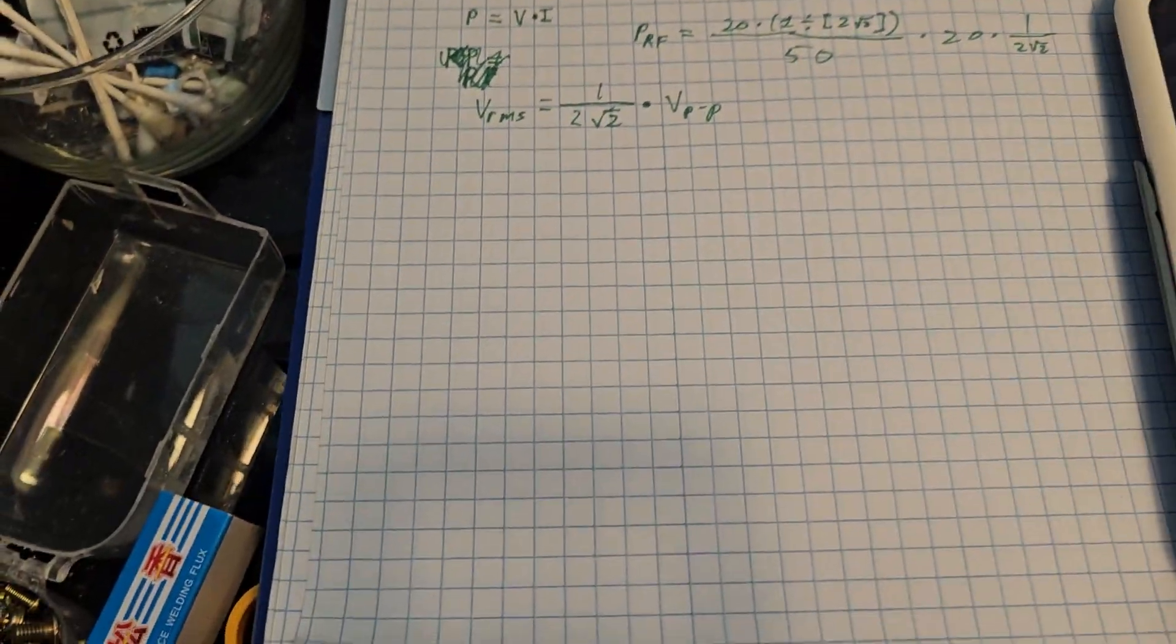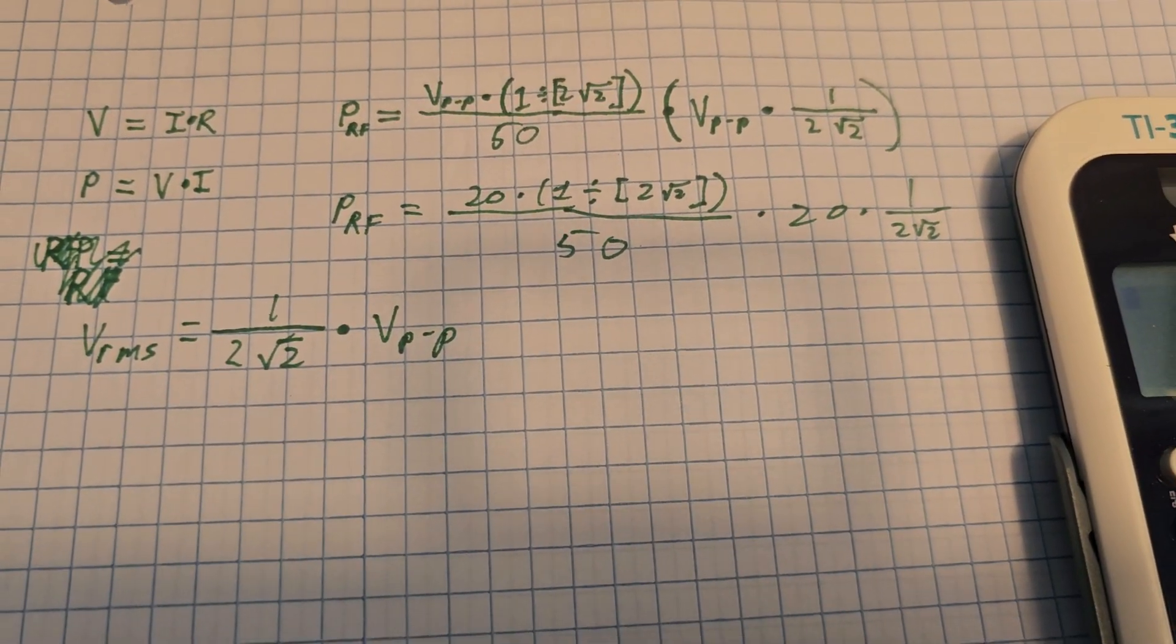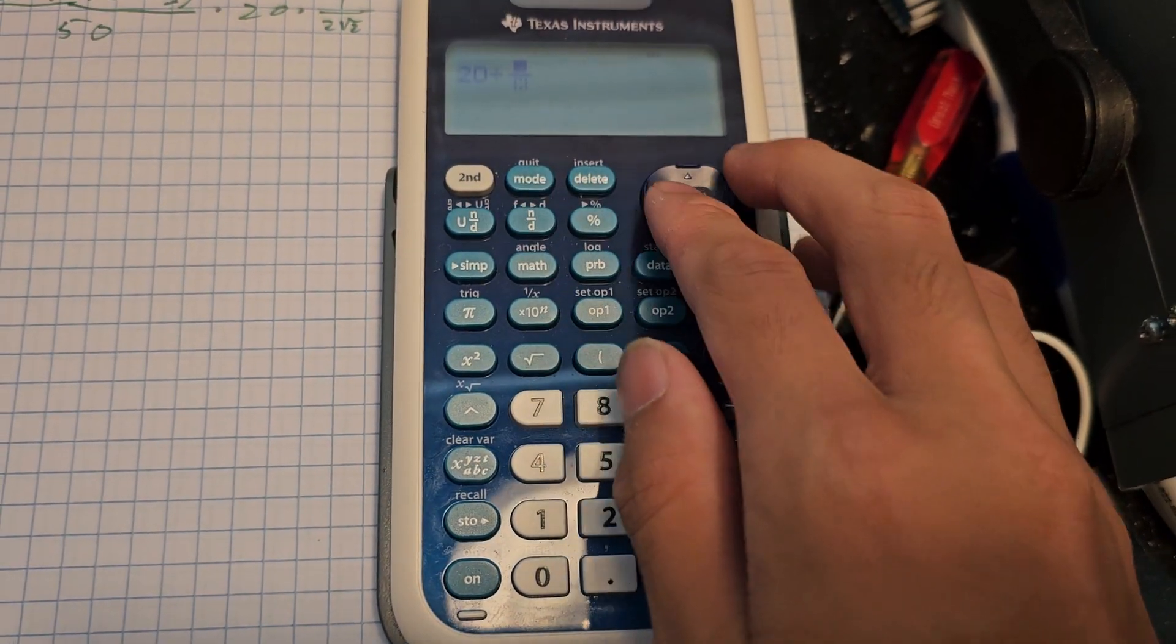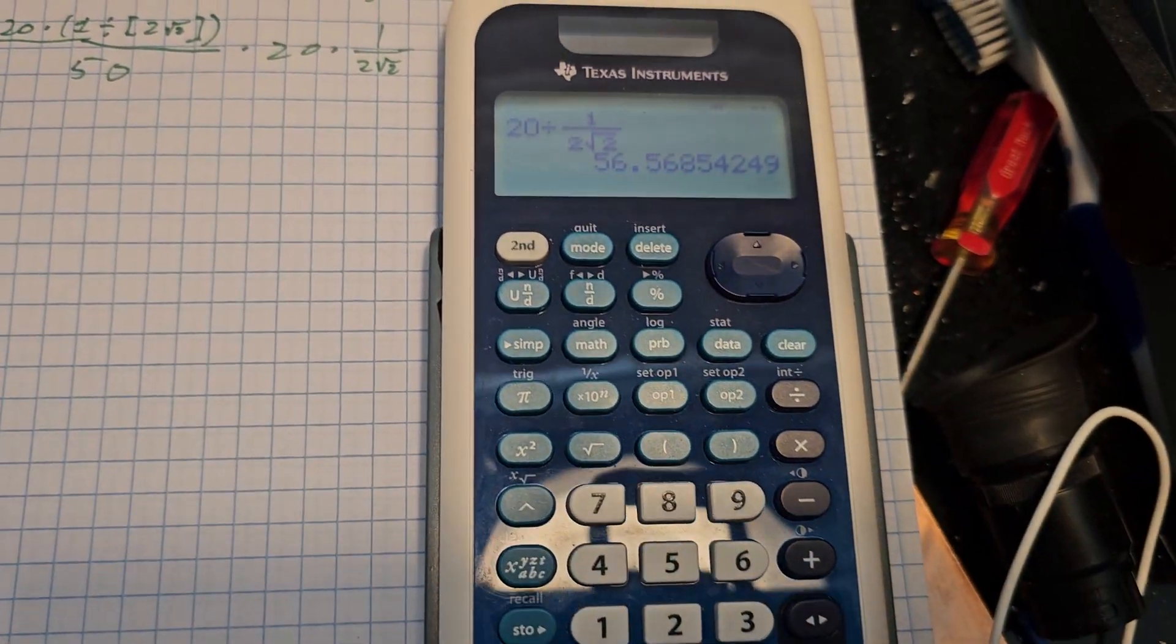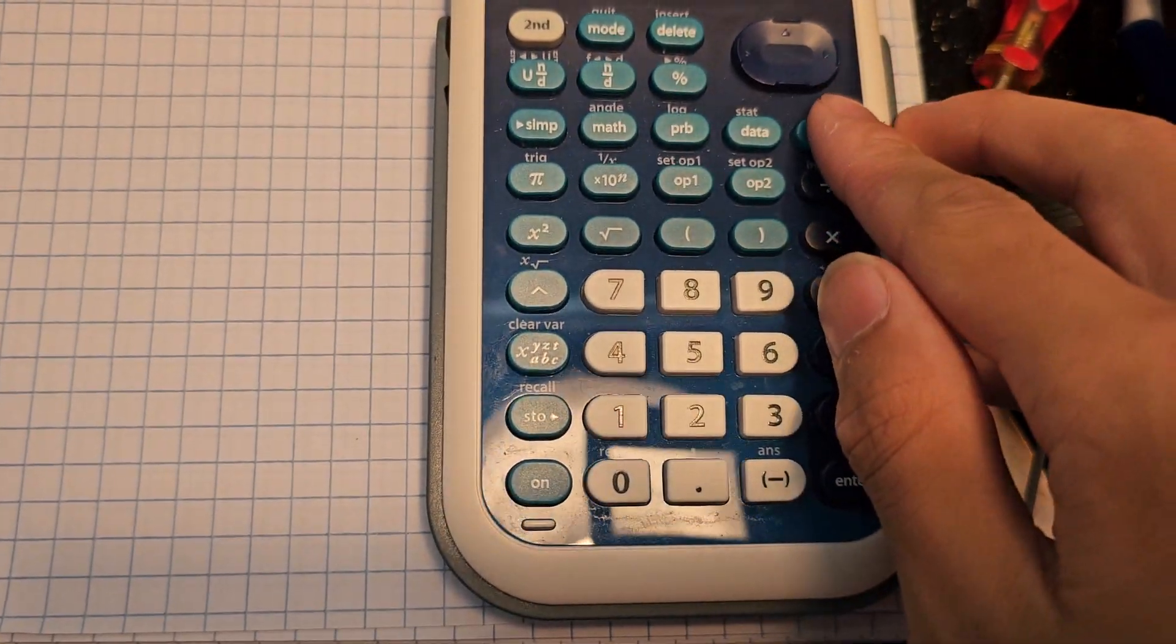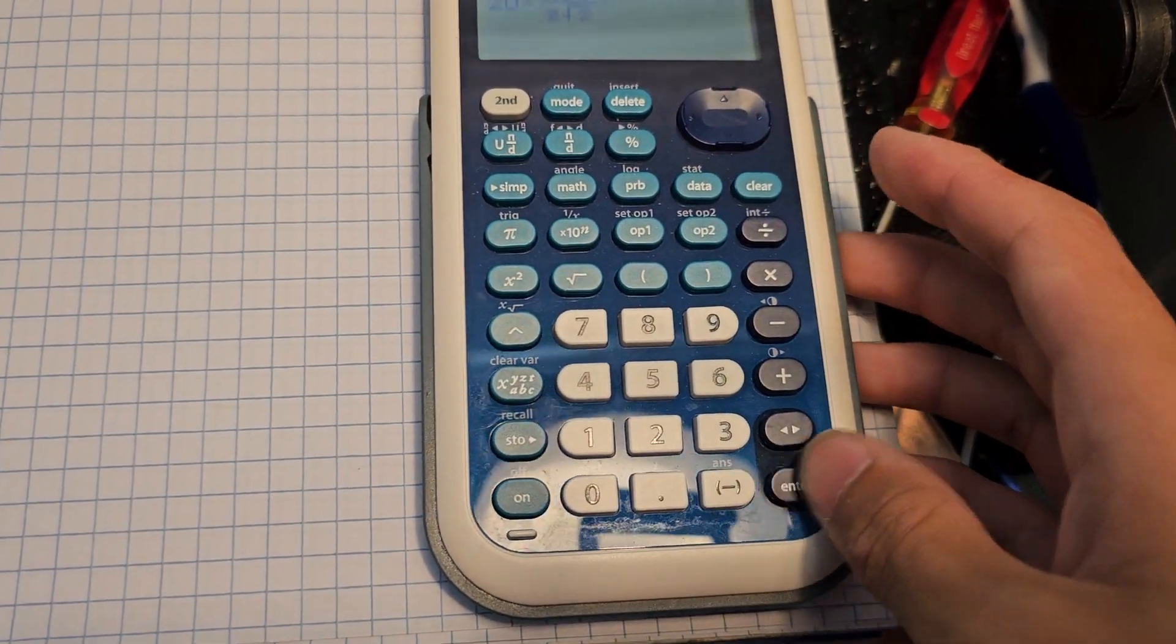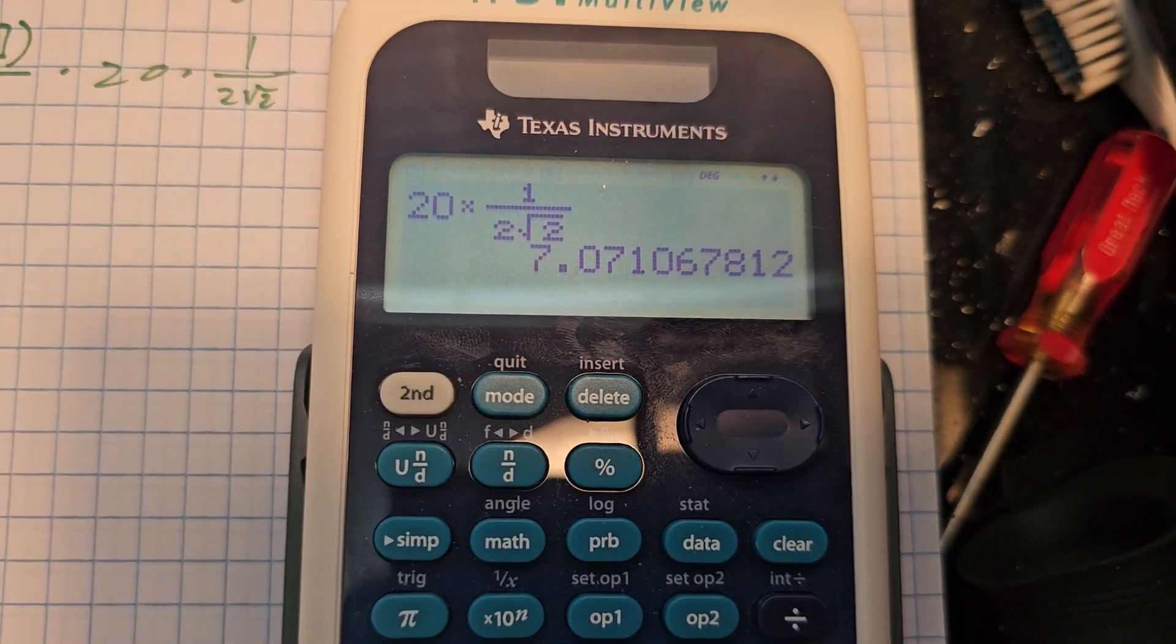Now let's solve for that using our calculator. So we're first going to find our RMS voltage and divide it by 50. So 20 times 1 over 2 times square root of 2 - that is our RMS voltage, 7 volts approximately.